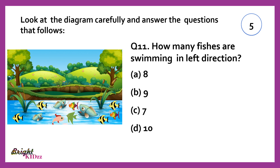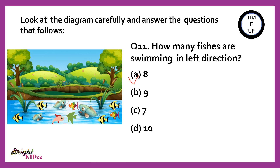How many fishes are swimming in the left direction? Counting: 1, 2, 3, 4, 5, 6, 7, 8. So the answer is 8.